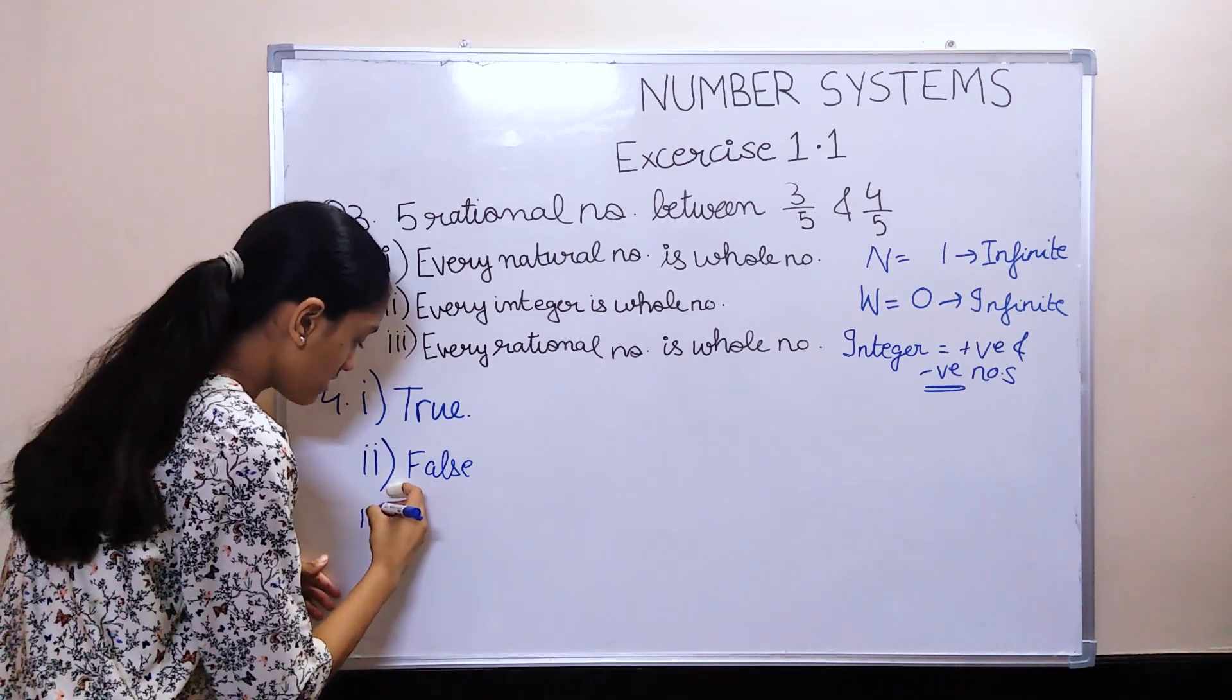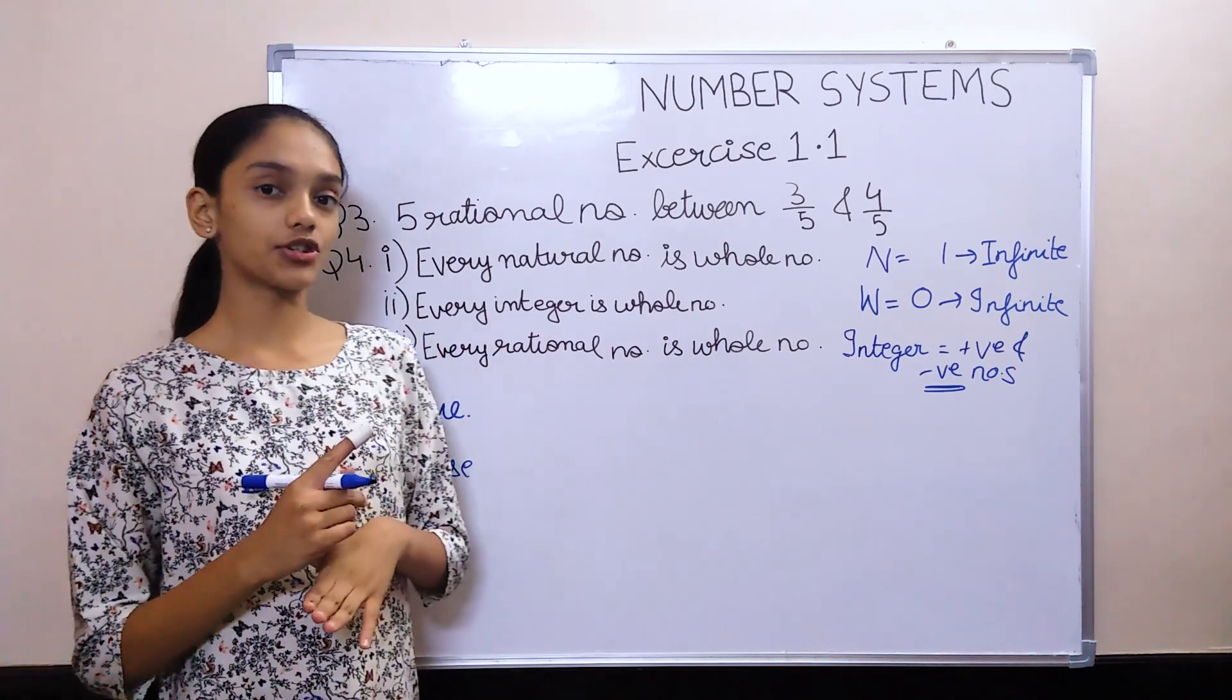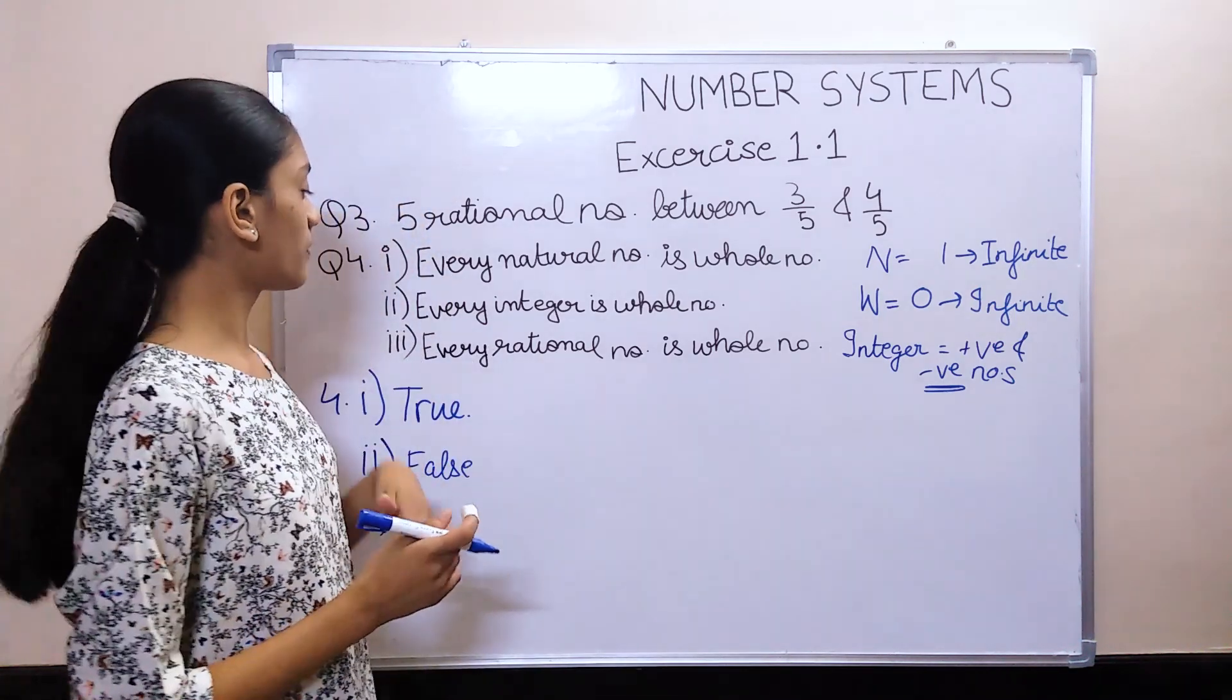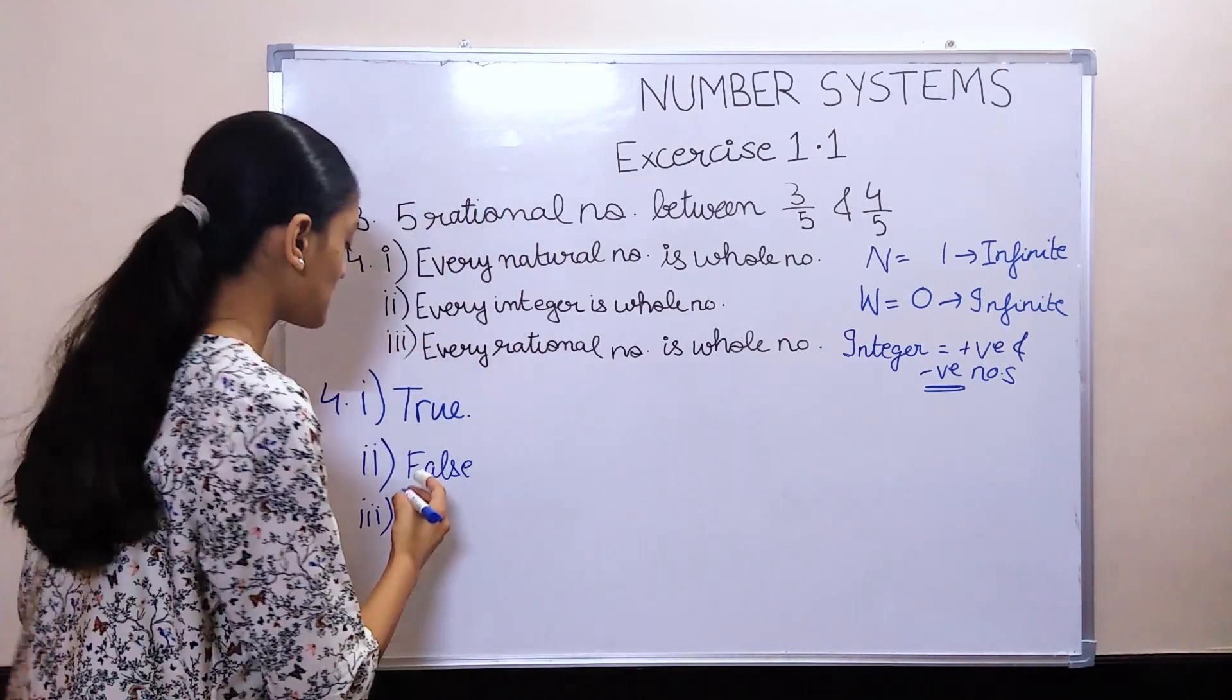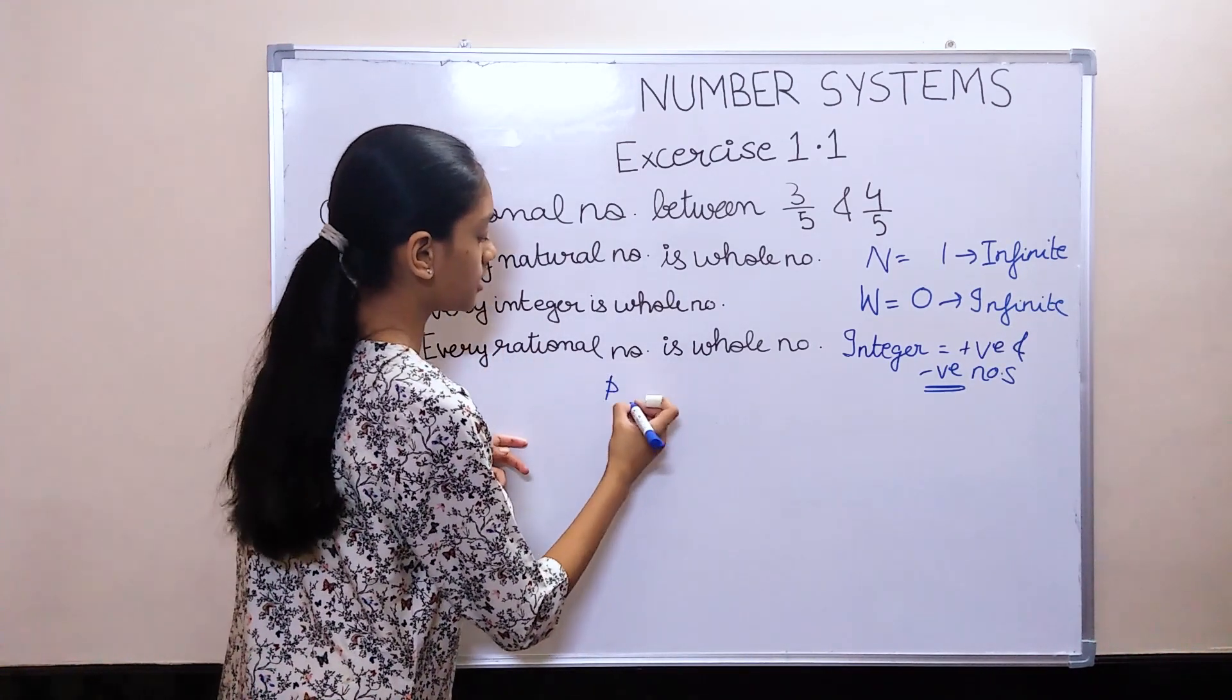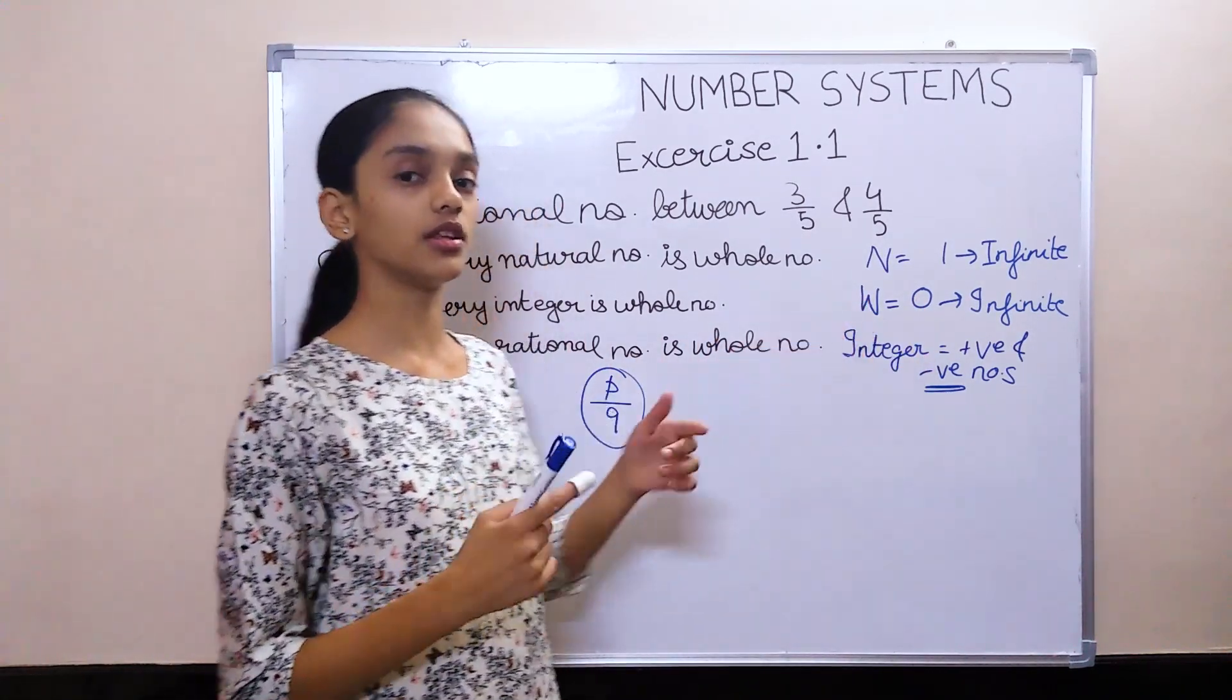The last question of this exercise, third one: every rational number is a whole number. We know the definition of a rational number—it can be written in the form of P by Q where P and Q are integers and Q is not equal to 0. This statement is again false. Why? Because rational numbers can be written in the form of P by Q, which is a fraction.